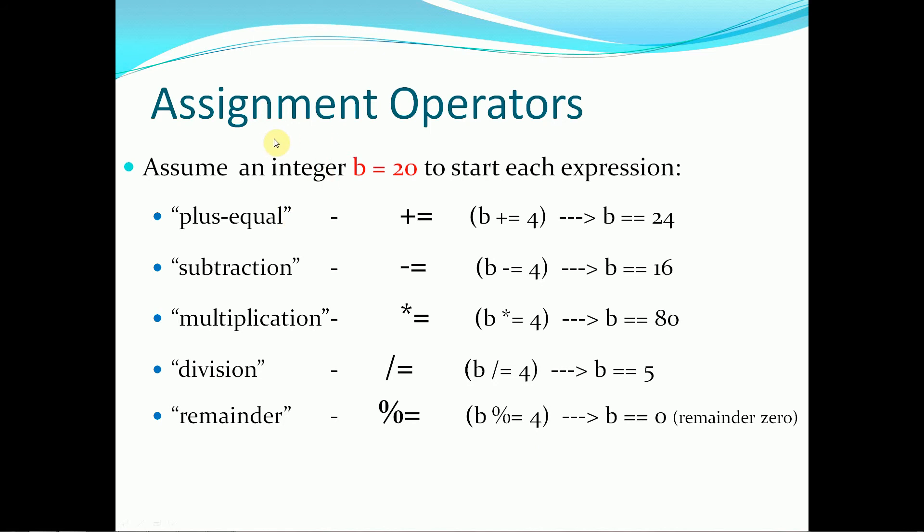Now assignment operators. Assume we have an integer variable called b, which is assigned the value 20 to start each of these expressions. So the plus equal symbol, denoted plus equal, in this case 20 plus equal 4 yields 24.